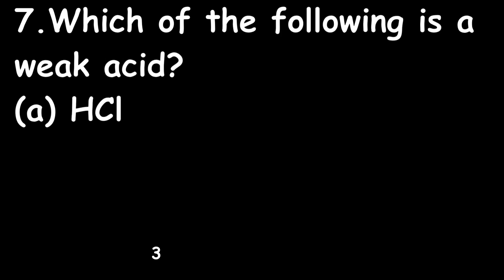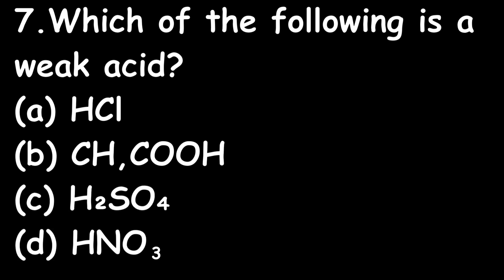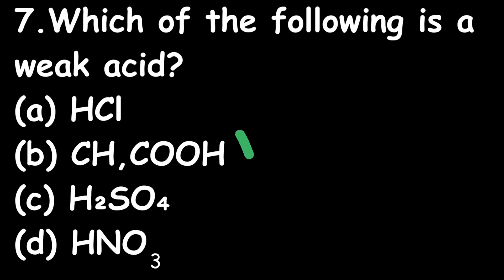Question 7: Which of the following is a weak acid? Option A: HCl; Option B: CH₃COOH; Option C: H₂SO₄; Option D: HNO₃. The right answer is Option B — CH₃COOH, that is acetic acid.